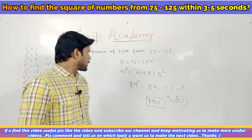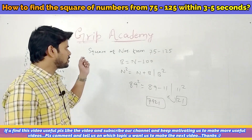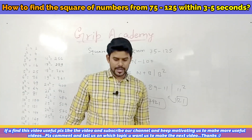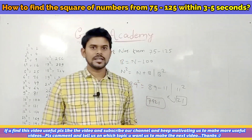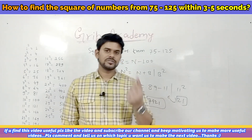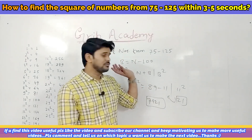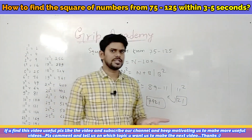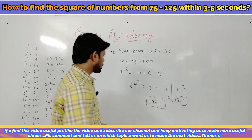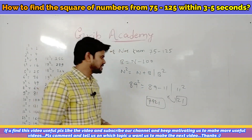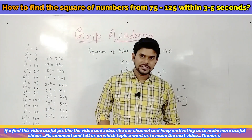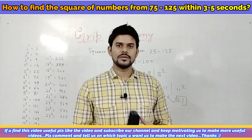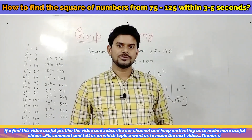Like this you can find the square of any number from 75 to 125. If you practice, I can guarantee you can find the square of any number from 1 to 125 within just 3 to 4 seconds. If you find this video useful, please like the video and subscribe to our channel. Thanks for watching.